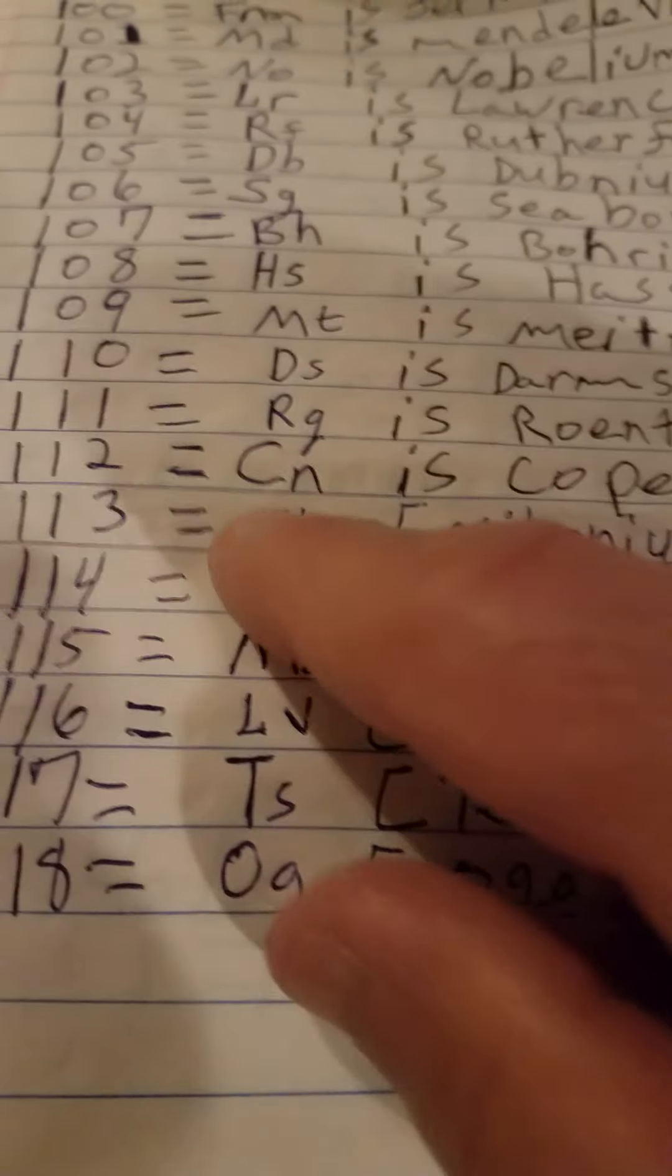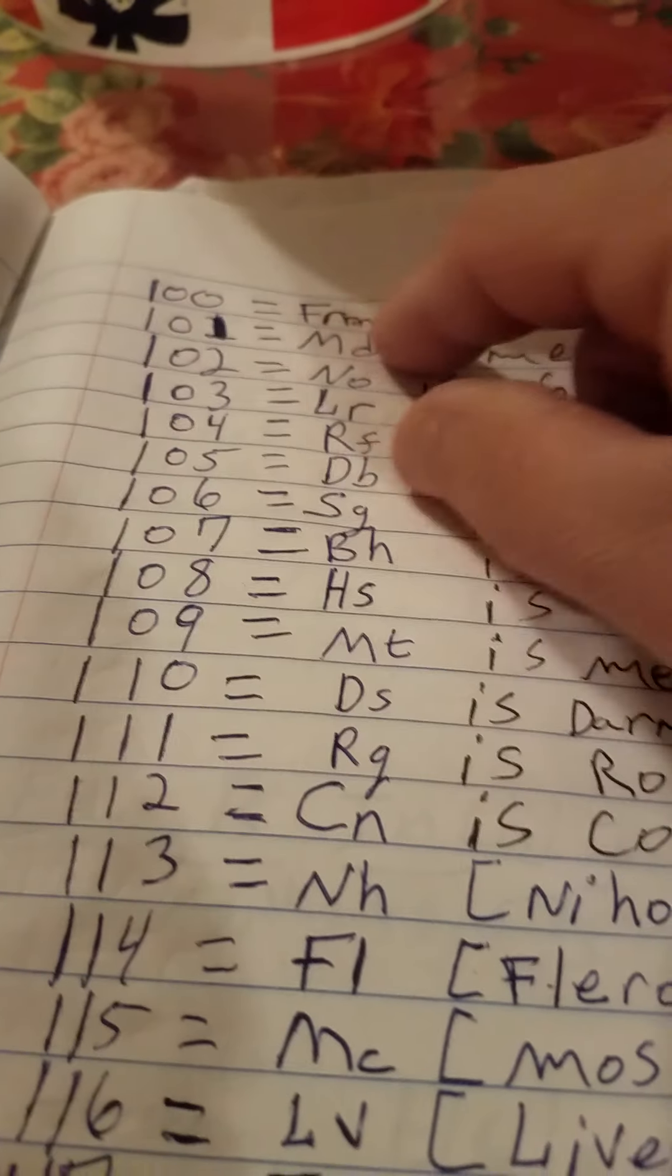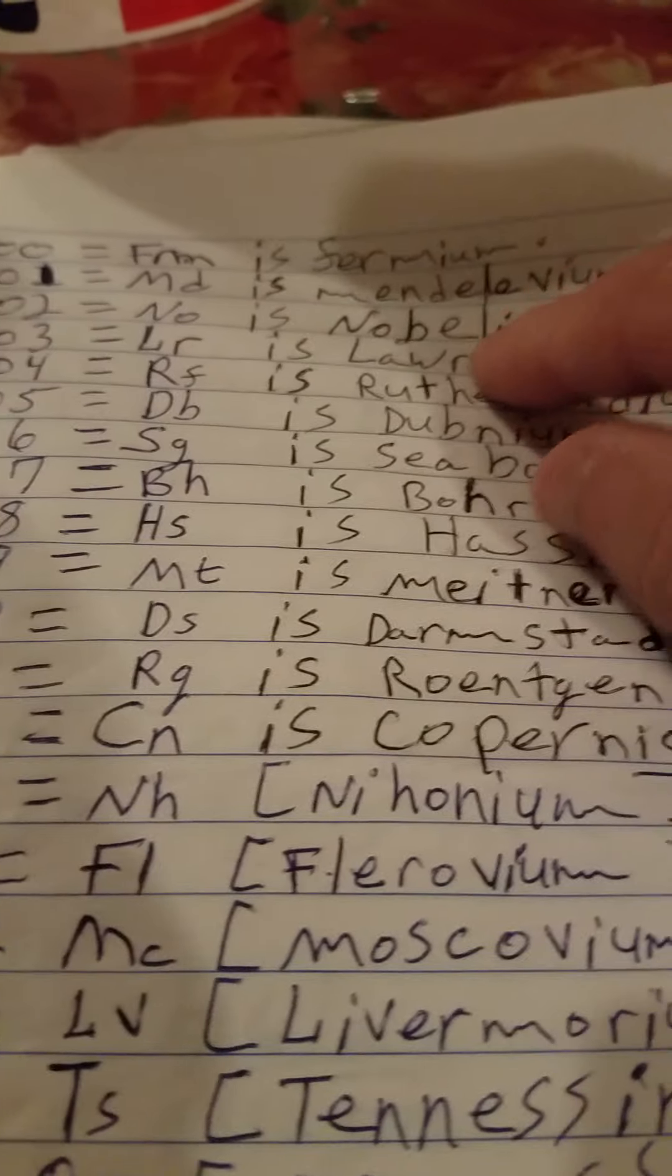These are new from 113 all the way down. Now I want to write all this down from 100, element 100 which is FM for Fermium, all the way down to Oganesson.